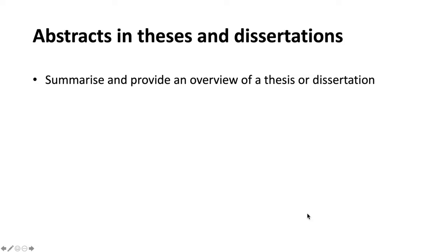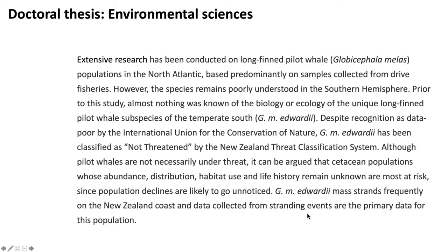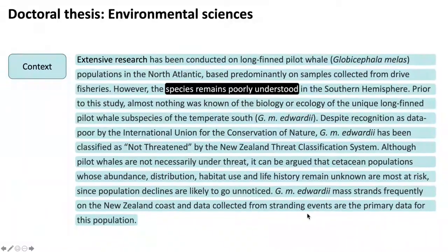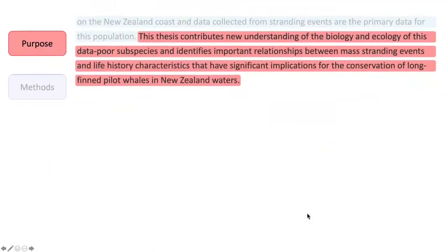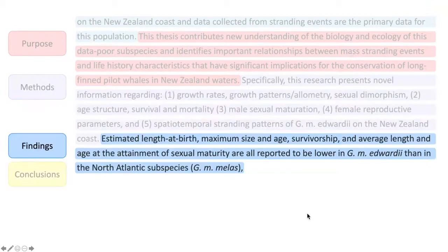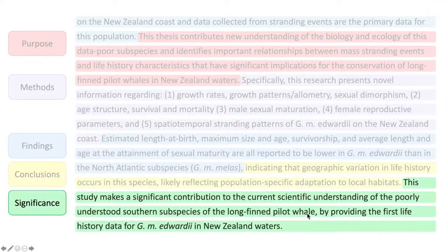Abstracts for theses and dissertations summarize and provide an overview of a thesis or dissertation. This doctoral thesis abstract has context, which provides a brief background to the topic and indicates why the topic is of interest. The purpose of the thesis is stated, the methods that were used are outlined, the main findings are summarized, and the conclusions and significance of the study are stated.